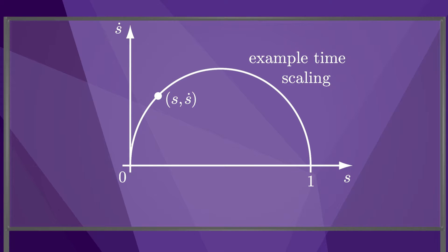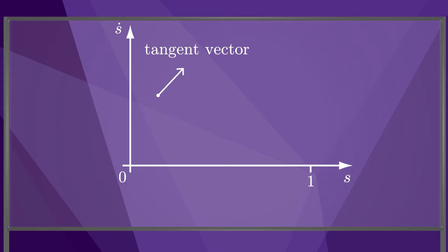Now let's look at a particular state of the robot on its trajectory, indicated by the point s, s dot. We can draw the tangent vector to the time-scaling. Now let's get rid of the time-scaling so we can focus on this tangent vector. The tangent vector consists of a horizontal component and a vertical component. The horizontal component expresses the rate of change of s, so it is just s dot, which can be drawn as proportional to the height of the point along the s dot axis.